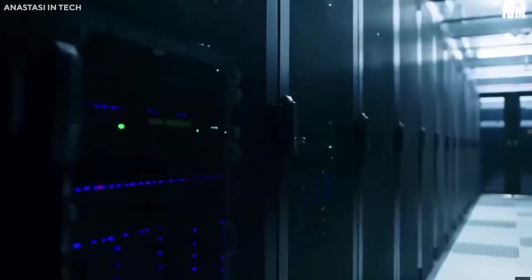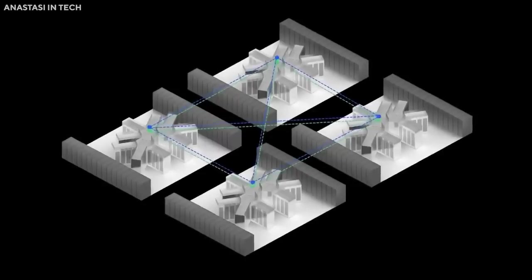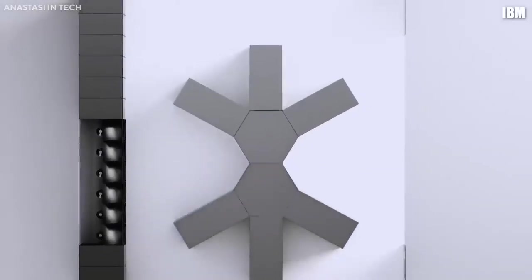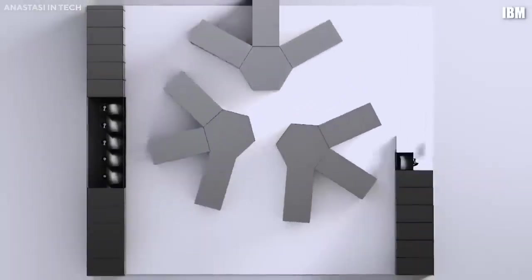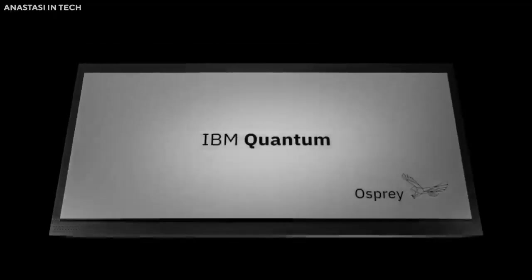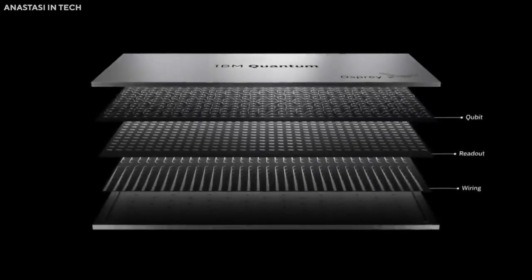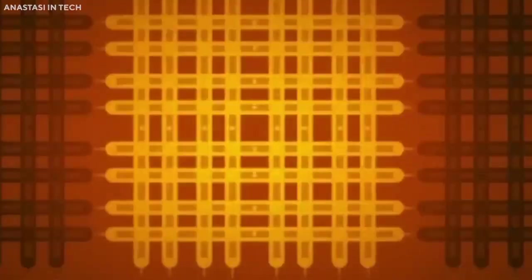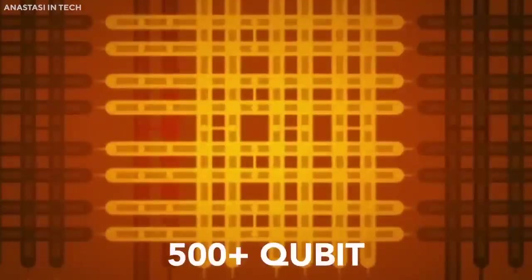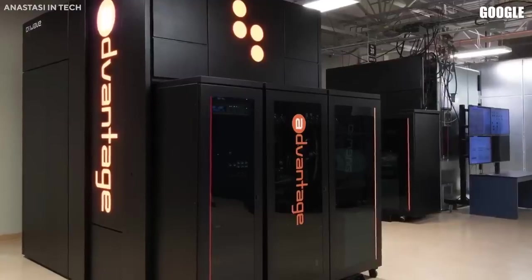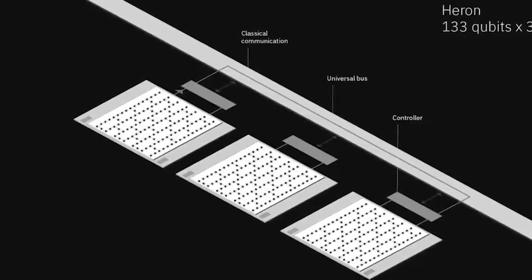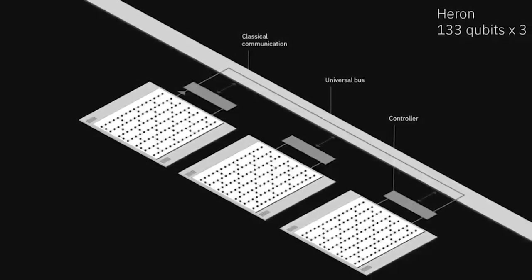IBM's vision of quantum-centric supercomputing transcends traditional computational paradigms, nudging us towards an era where quantum and classical computing coexist and collaborate seamlessly. Two of the most vital elements propelling this vision are the innovative Heron processors and the groundbreaking Quantum System 2. The Heron processors are emblematic of the strides made in classical computing power. They represent IBM's cutting-edge classical processor technology designed to facilitate quantum computing's intricate processes, including complex control algorithms and error correction protocols. Heron is not just another classical processor, it's a pivotal instrument calibrated to accompany and complement the quantum journey.